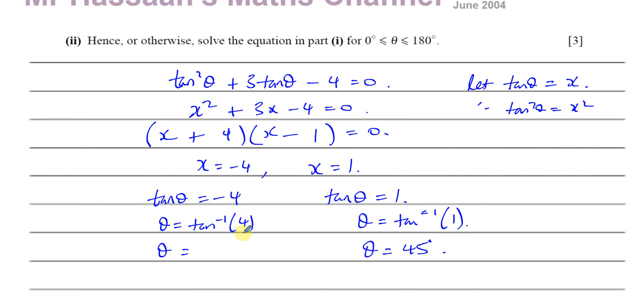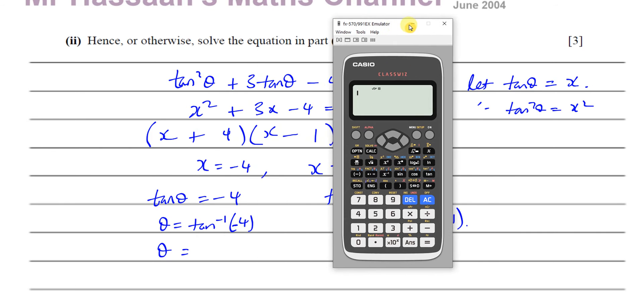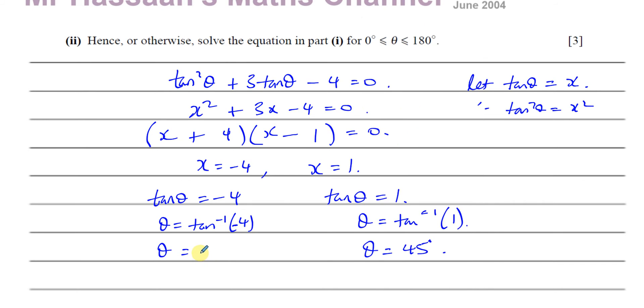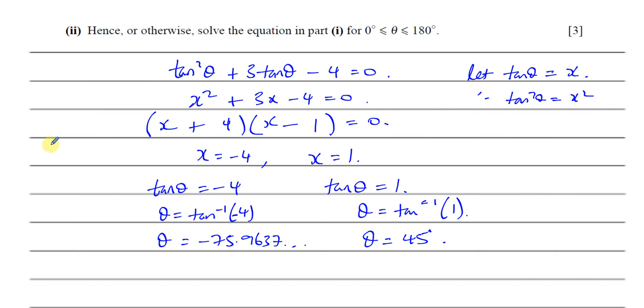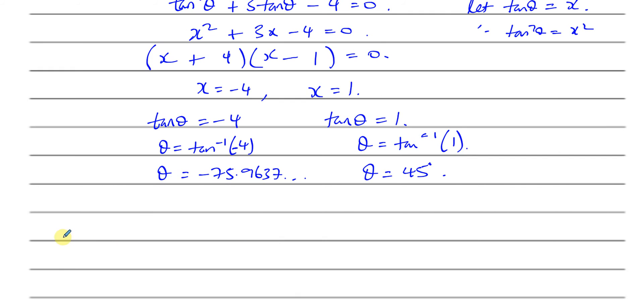And the inverse tan of minus 4, minus 4. Take your calculator. Make sure it's in degree mode. And inverse tan of minus 4. That's going to give you minus 75.963. Minus 75.9637. Now, this solution here is out of the range, but it doesn't mean that we don't have any solution in the range, because the tan curve repeats itself every 180 degrees. The tan curve repeats itself every 180 degrees.